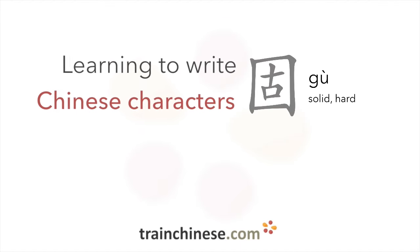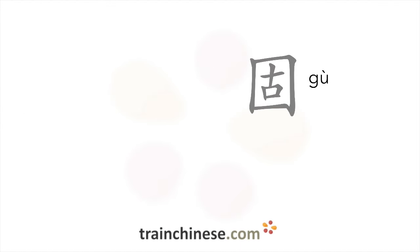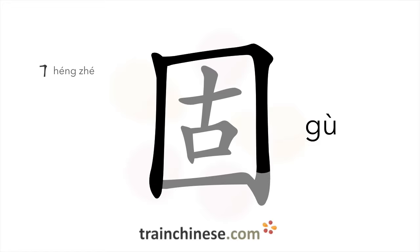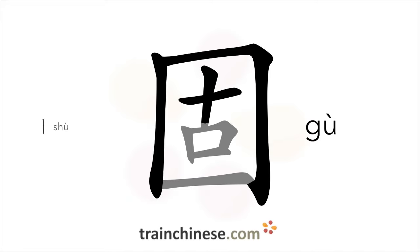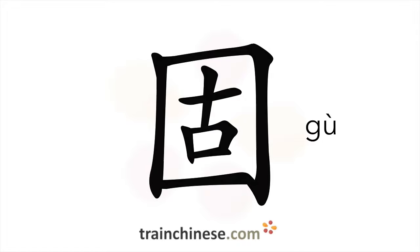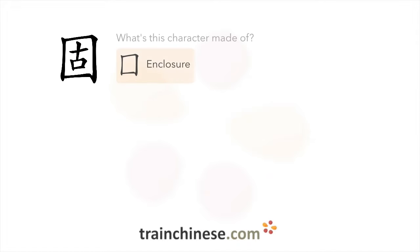Welcome to this Train Chinese character video. It's written with eight strokes. Let's look at what goes into this character. The radical on this character means enclosure.